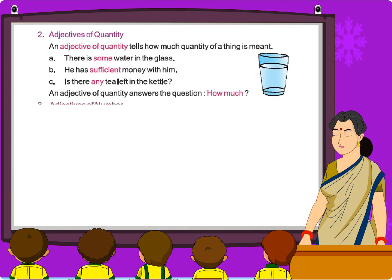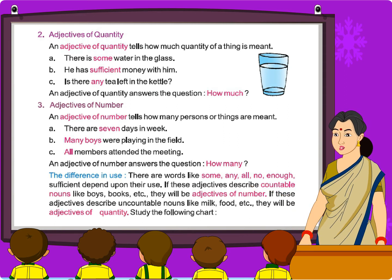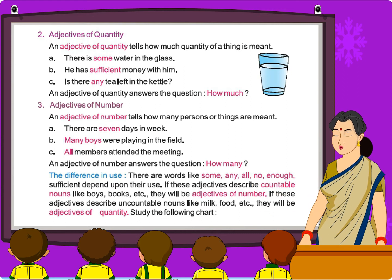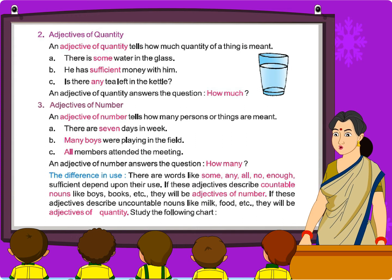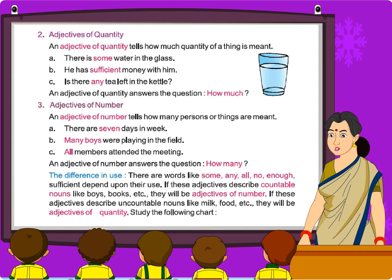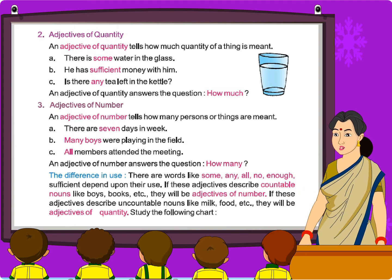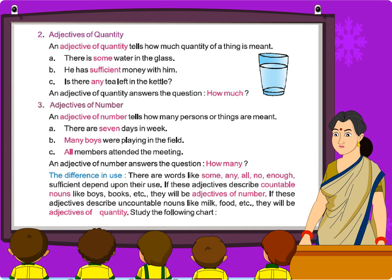Adjectives of quantity. An adjective of quantity tells how much quantity of a thing is meant. For example: 'There is some water in the glass.' 'He has sufficient money with him.' 'Is there any tea left in the kettle?' An adjective of quantity answers the question: How much?